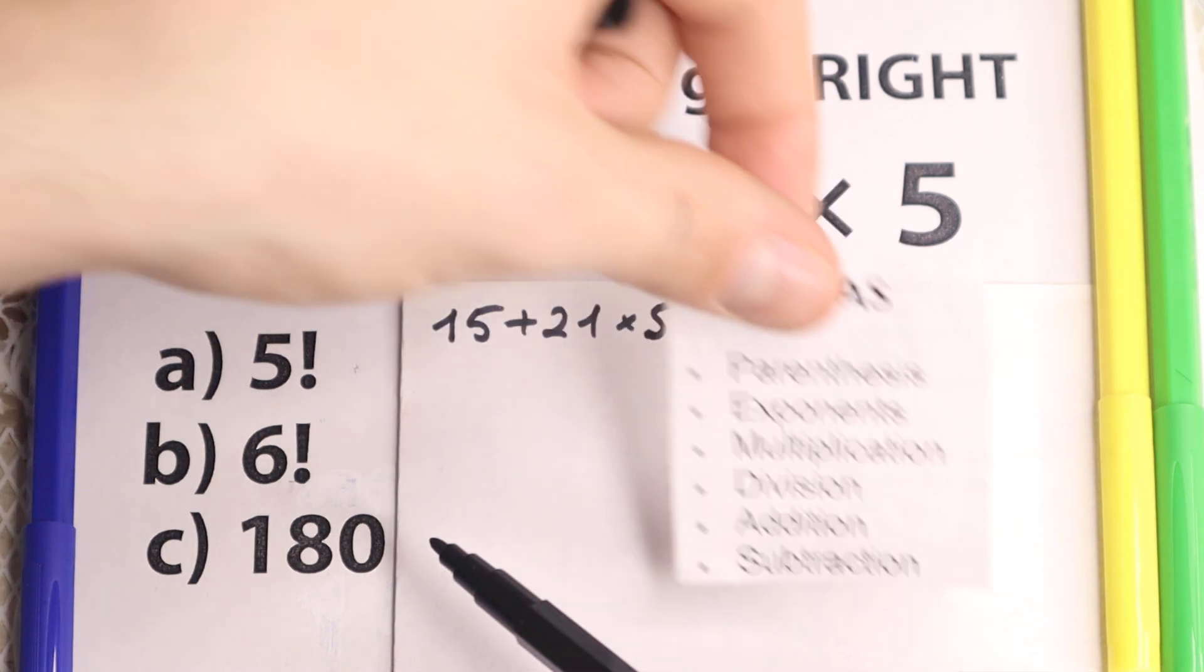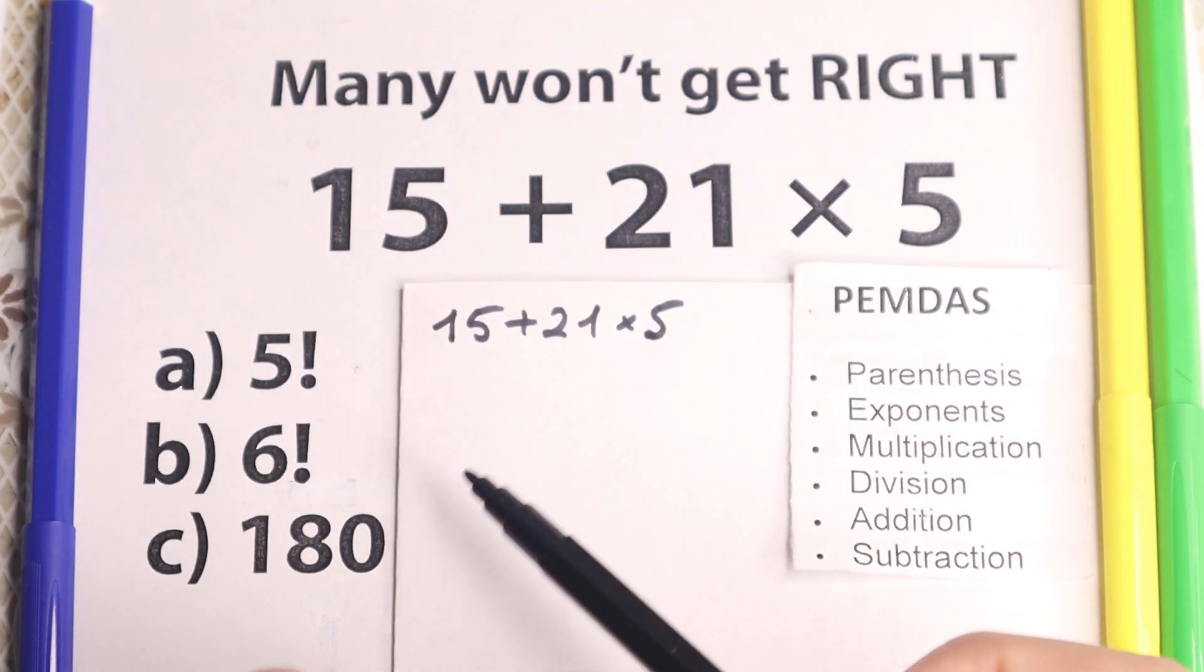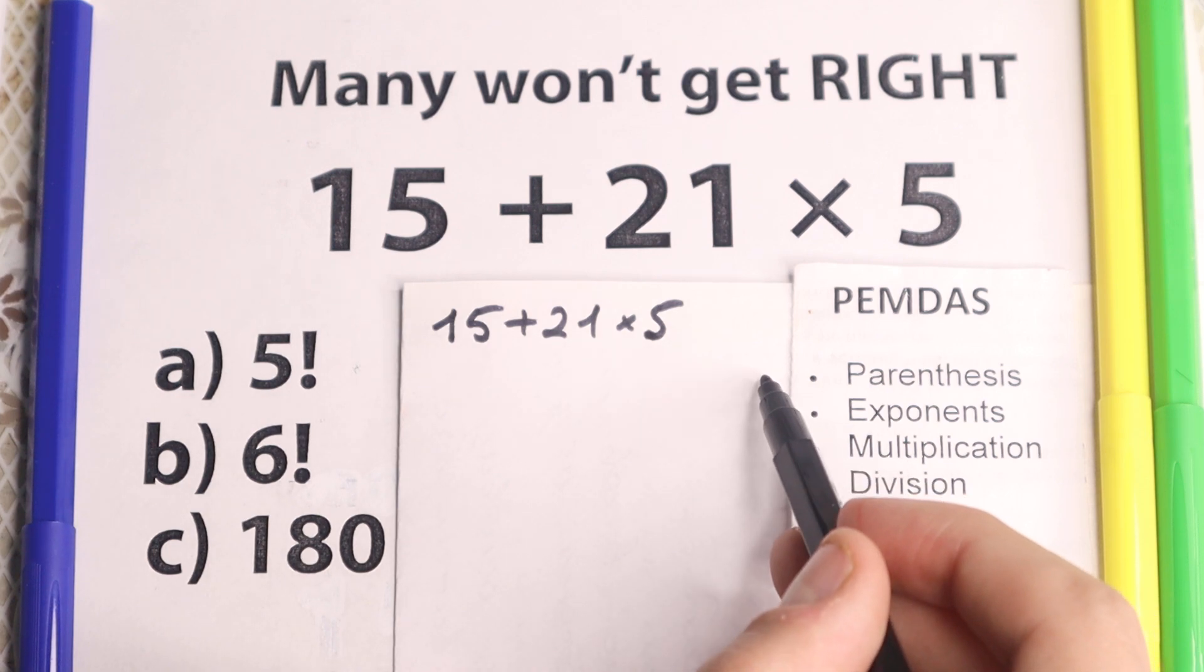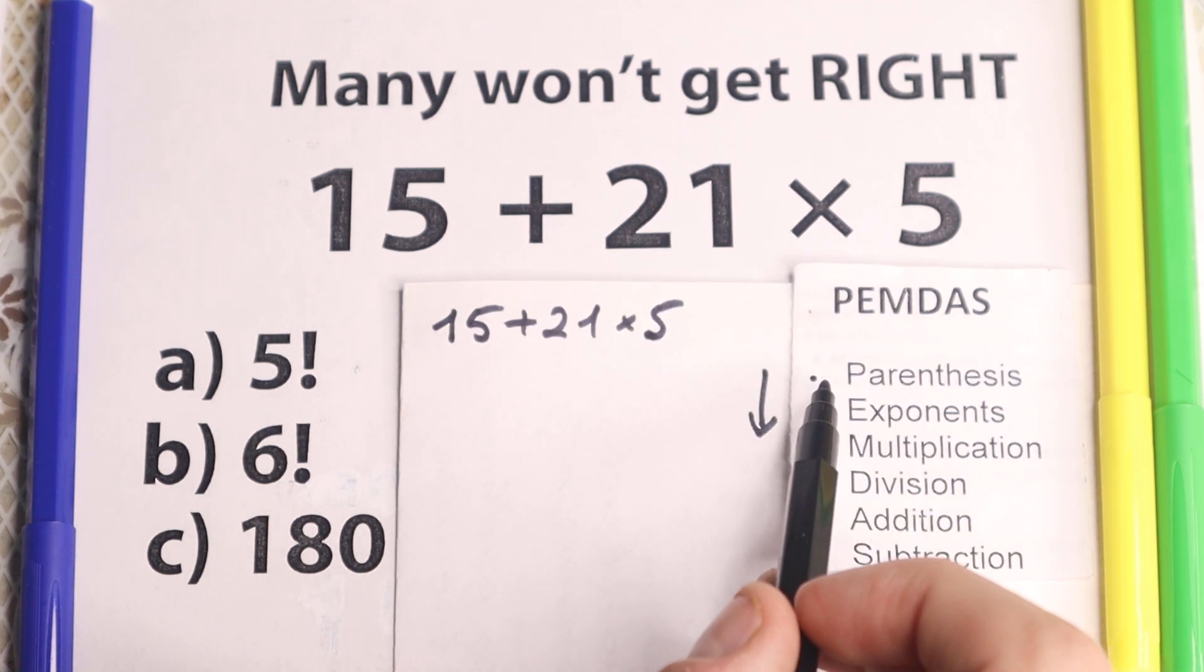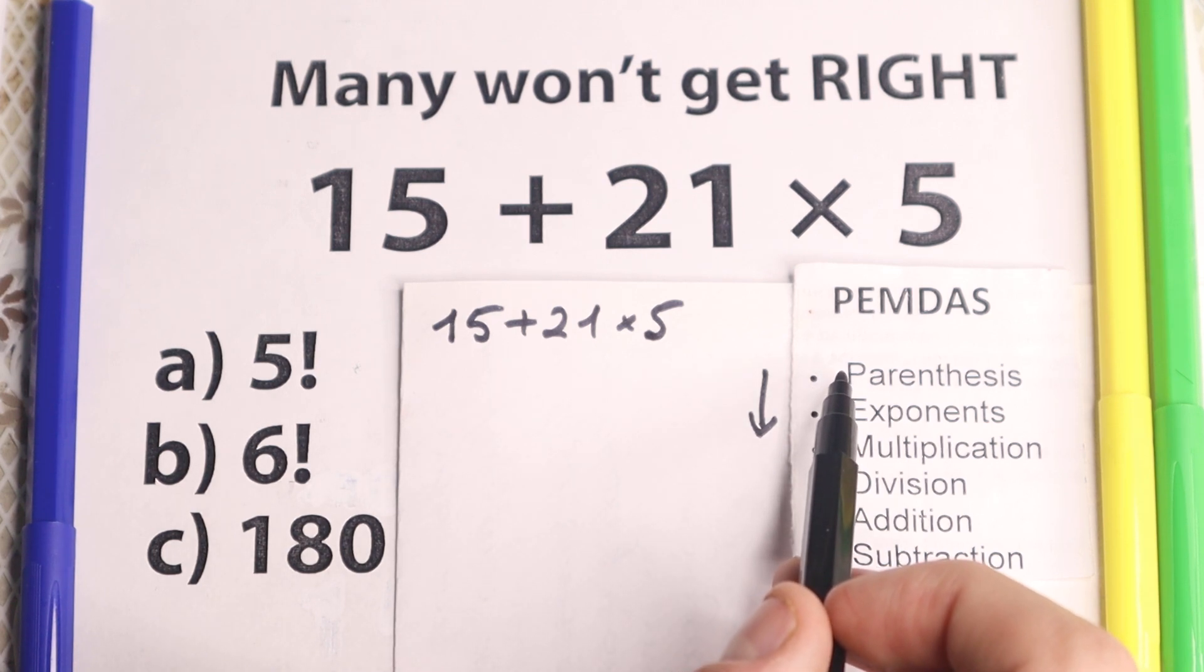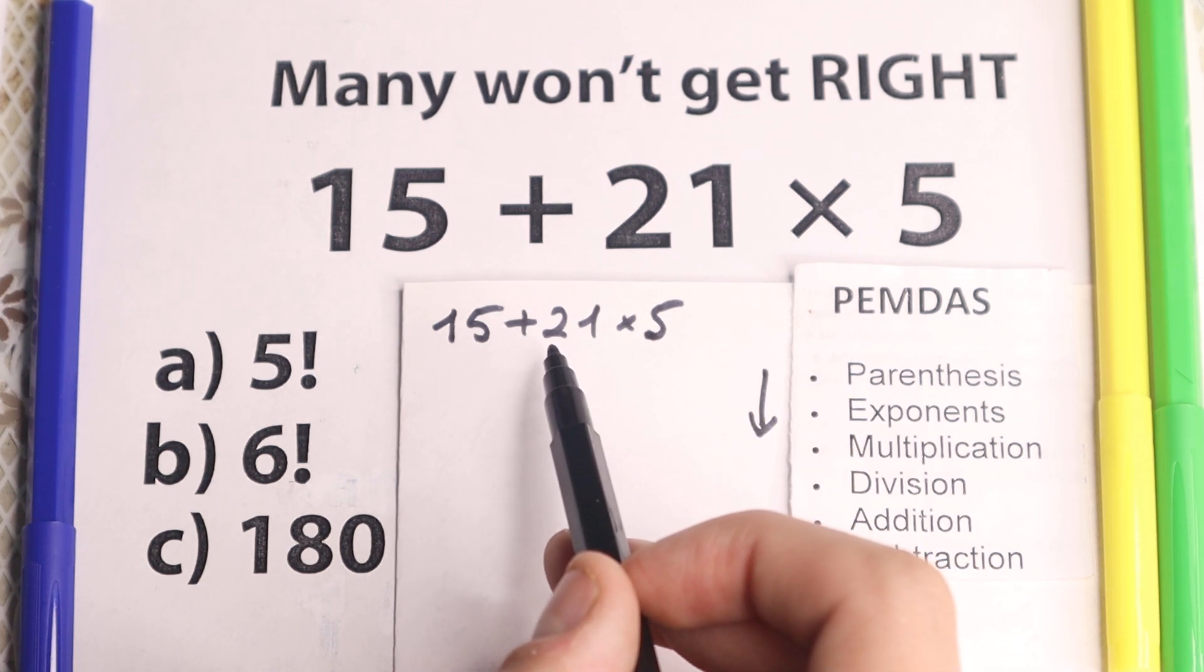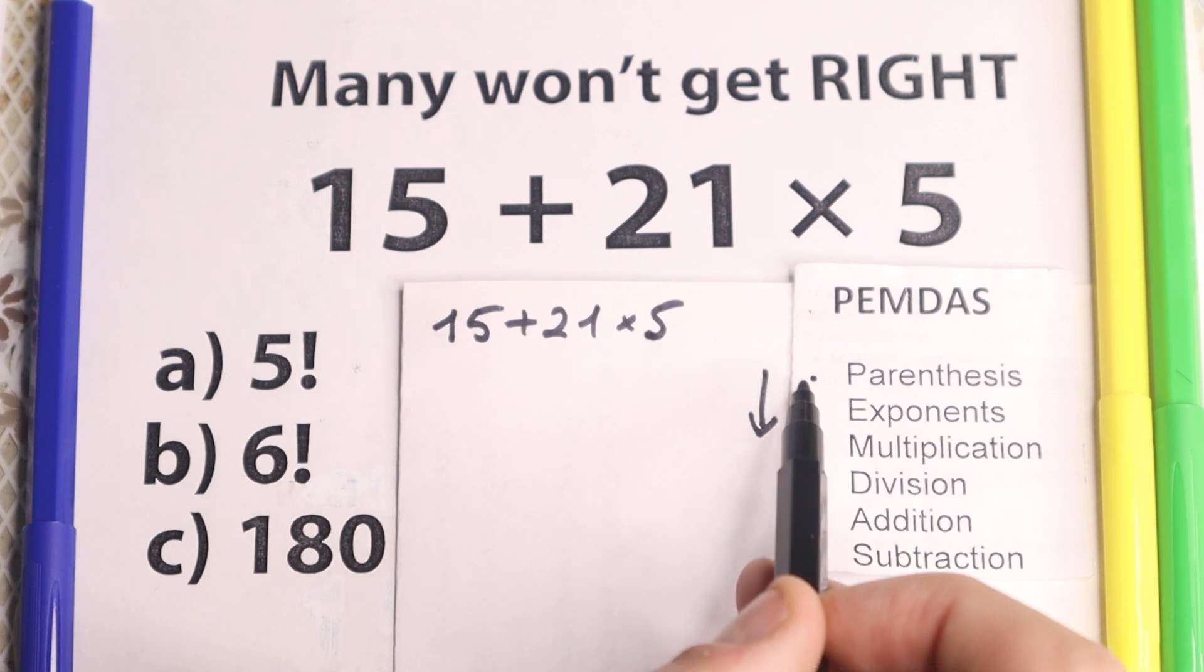Not multiplication, because if we go to our PEMDAS order of operation right here, the main popular order of operation in the world, from the top to the bottom. The first step, parentheses, so are there any parentheses right here? No, I don't see any of those, so we skip this part.